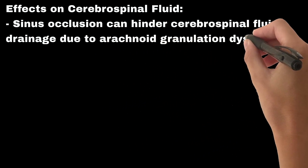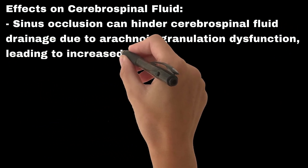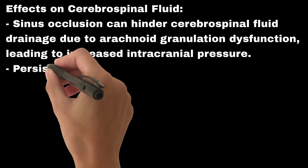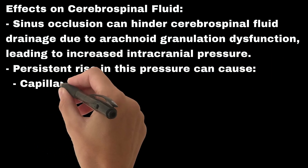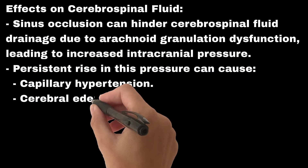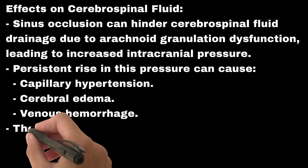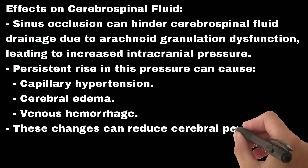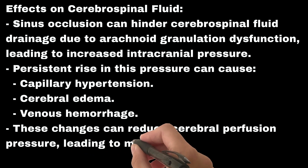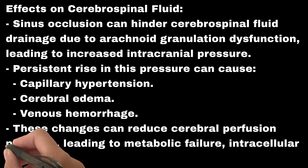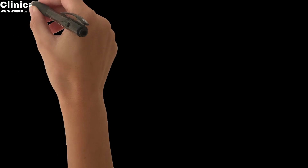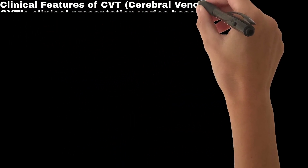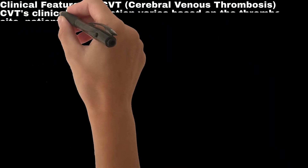Sinus occlusion can hinder cerebrospinal fluid drainage due to arachnoid granulation dysfunction, leading to increased intracranial pressure. Persistent rise in this pressure can cause capillary hypertension, cerebral edema, and venous hemorrhage. These changes can reduce cerebral perfusion pressure, leading to metabolic failure, intracellular edema, and cytotoxic edema.